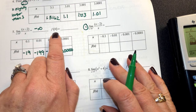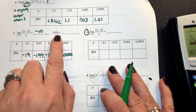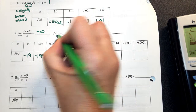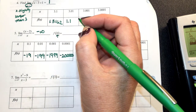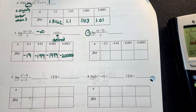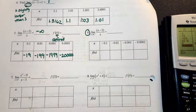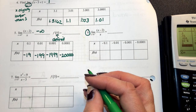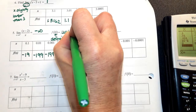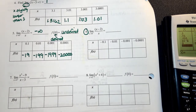What would f of 0 be? What's the difference in notation between a limit and f of 0? F of 0 asks for the defined value — what happens when x is exactly equal to 0. That gives you 0 in the denominator, so it's undefined.